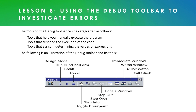The debug toolbar in the Visual Basic Editor can be used to investigate errors. The tools on that toolbar can be categorized as follows: tools that help you manually execute the program, tools that suspend the execution of the code, and tools that assist in determining the values of expressions. The first set of tools would be the ones that suspend the code, then tools that manually execute the program from Toggle Breakpoint through Step Out, and finally the window tools that assist in determining the values of expressions.